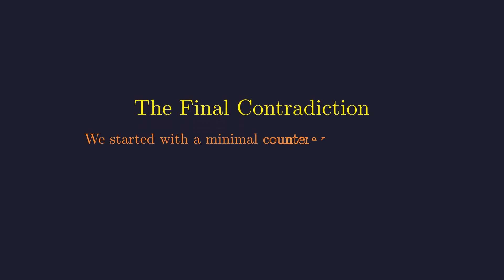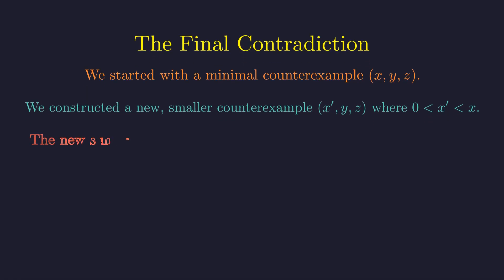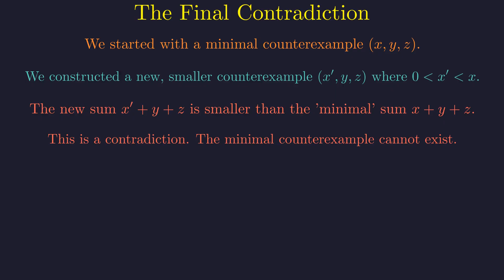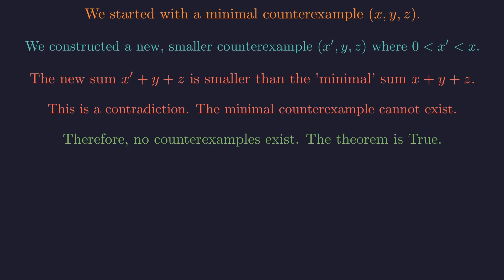And now we can deliver the final blow to our assumption. Remember, we started by assuming there was some minimal counterexample, a triple x, y, z with the smallest possible sum. But then we constructed another counterexample x prime, y, z, where x prime is a positive integer that's strictly smaller than x. This new counterexample has a smaller sum than our supposedly minimal one. But that's impossible. We can't have something smaller than the smallest. We've reached a logical contradiction. The only way to resolve this paradox is to admit our initial assumption was wrong. There never was a counterexample to begin with. And that proves Kedlia's theorem.